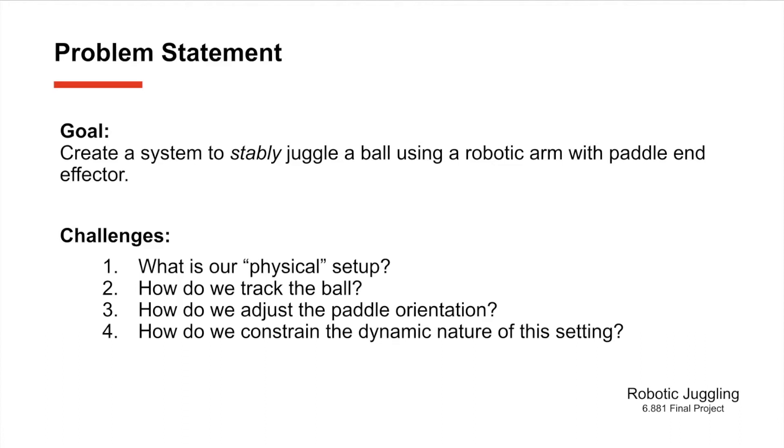When doing this there's a few questions we want to think of. First, what is our physical setup? This means what inputs do we need to create the control for this, what are the parameters of our ball, our paddle, etc. Further, how do we track the ball? As you might imagine the first thing you want to do to juggle something is you want to be able to track it as it's falling, as you hit it back up in the air.